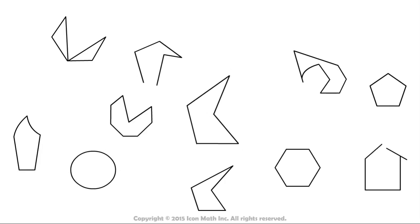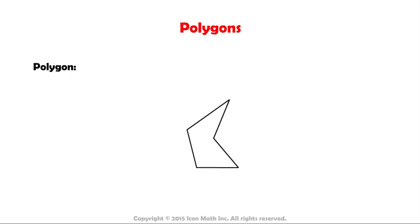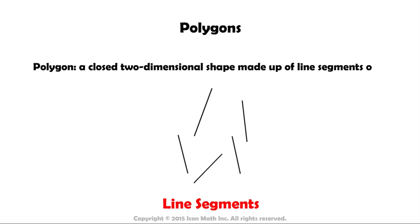Let's take a look at the following image. It contains various two-dimensional geometric shapes. Some of these could be called polygons. A polygon is a closed, two-dimensional shape made up of line segments only.